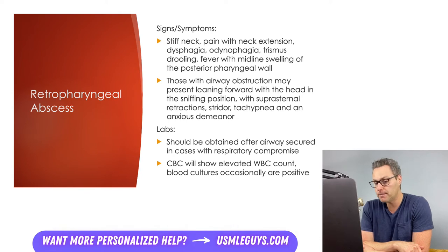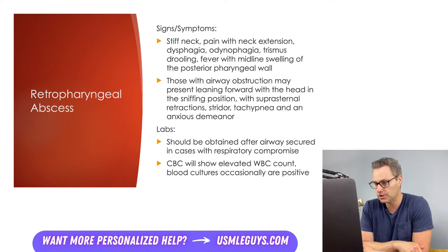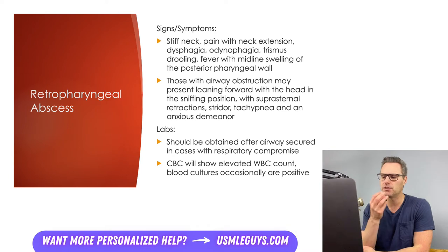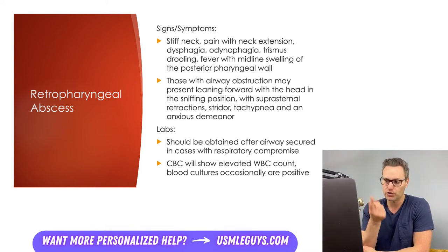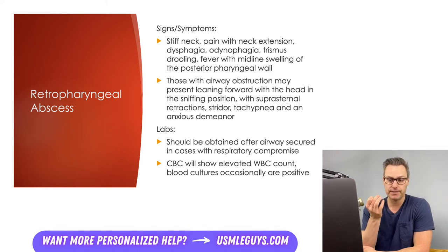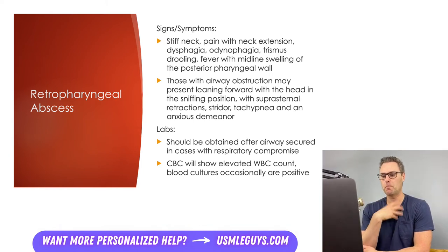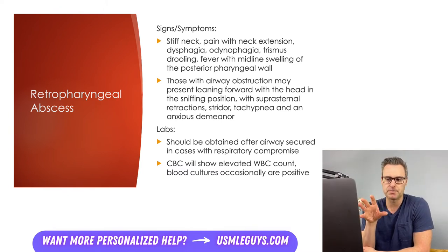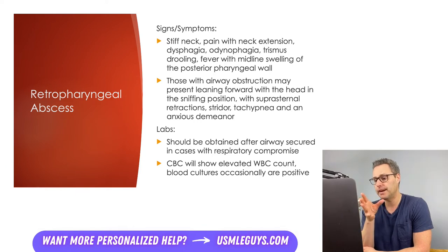If airway obstruction is present, they'll usually be leaning forward in a sniffing position with suprasternal retractions, stridor, tachypnea, and an anxious demeanor — indicative of respiratory distress, as they're trying to maximize airway patency. There's a lot of overlap with epiglottitis symptoms, but epiglottitis usually progresses more rapidly. Labs should be obtained if the patient is not in danger of respiratory compromise; otherwise, only after intubation and sedation. The white blood cell count will be elevated, and blood cultures may come back positive.